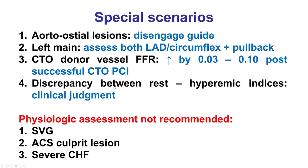Fourth, when there is discrepancy between resting and hyperemic indices, clinical judgment is needed. Finally, physiologic assessment is not recommended in saphenous vein grafts — because non-ischemic native lesions have very low progression rates as shown in the DEFER trial, but vein grafts are much more likely to progress — nor in ACS culprit lesions, where the supplied myocardium can be dysfunctional and vasodilation cannot be achieved. It can, however, be done in non-culprit lesions. Accuracy is also decreased in patients with severe congestive heart failure due to increased intracardiac pressures.